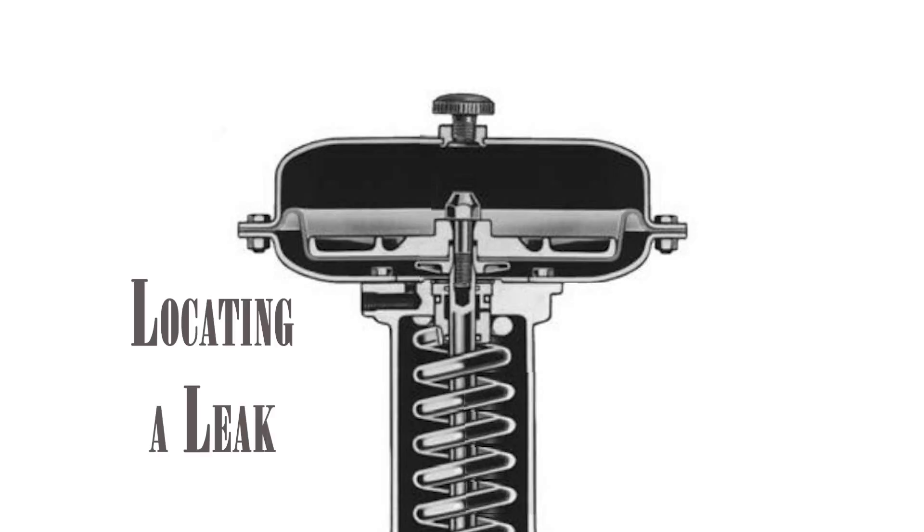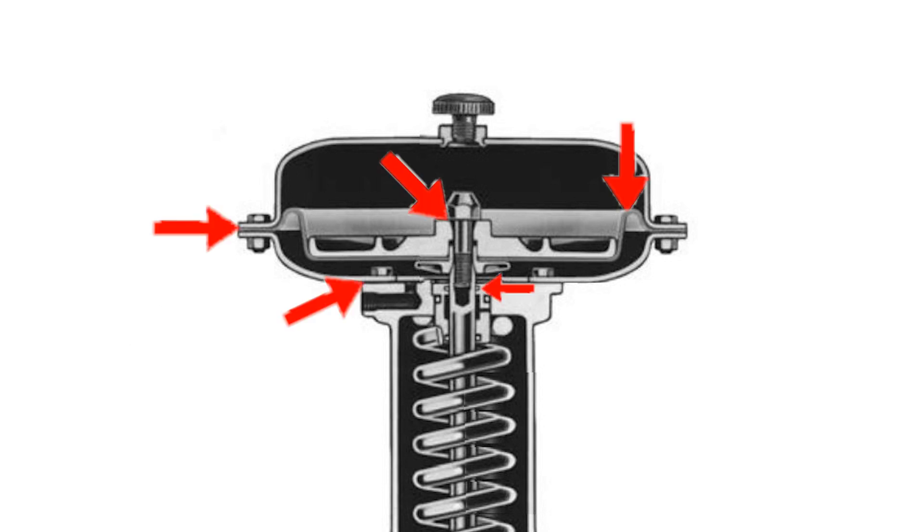There are numerous potential leak points on a Fisher rising stem actuator. The molded diaphragm is sandwiched between the upper and lower case of the actuator. Air can potentially leak from here if the bolts are loose, if the diaphragm is cracked,